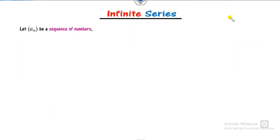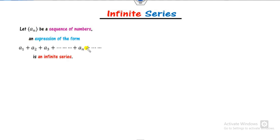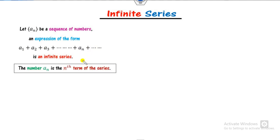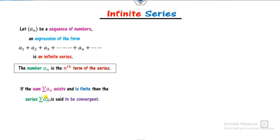So what is the infinite series? If you have a sequence A_n, then we can write the expression as A_1 plus A_2 plus A_n and so on — this is called the infinite series. Here A_n is called the nth term of the series. If the sum of this series exists and is finite, then we say the series is convergent; otherwise we say it is divergent.